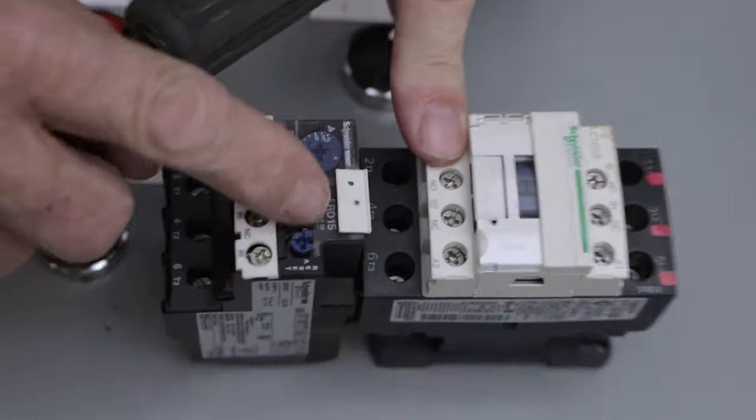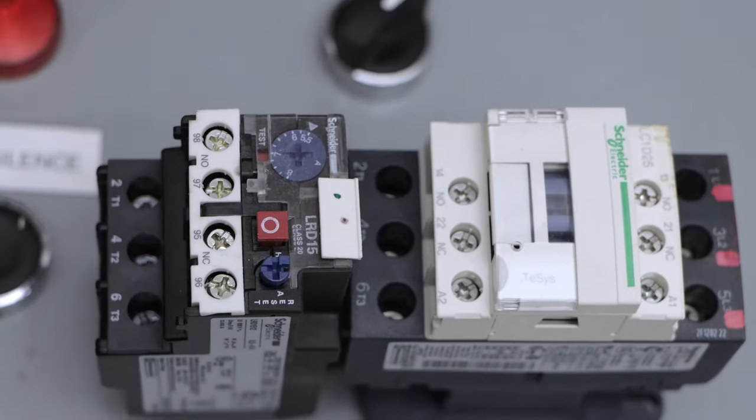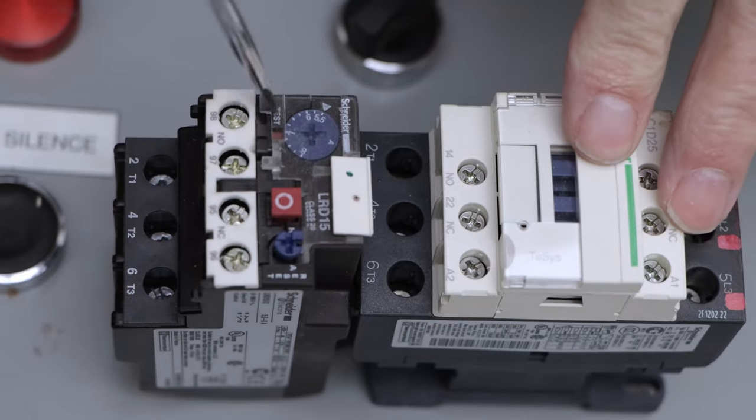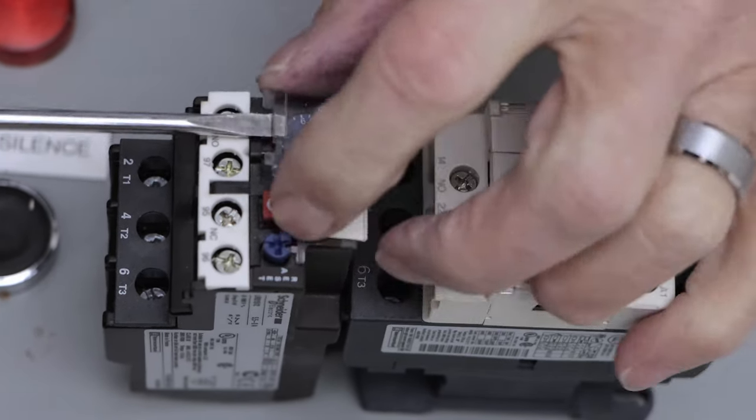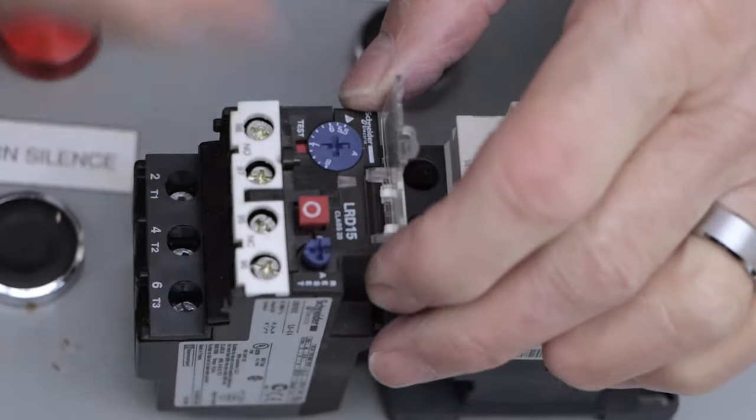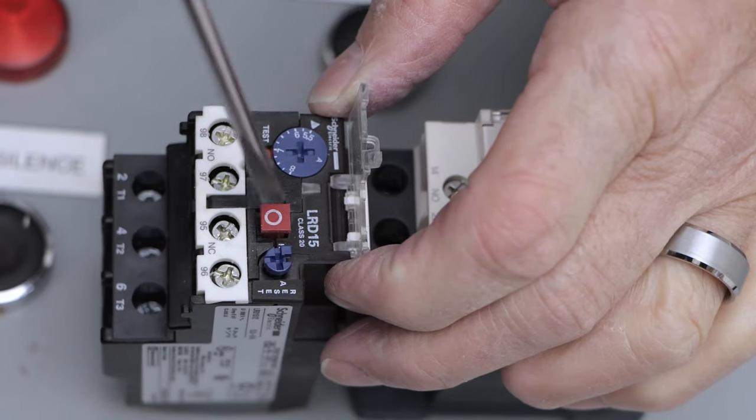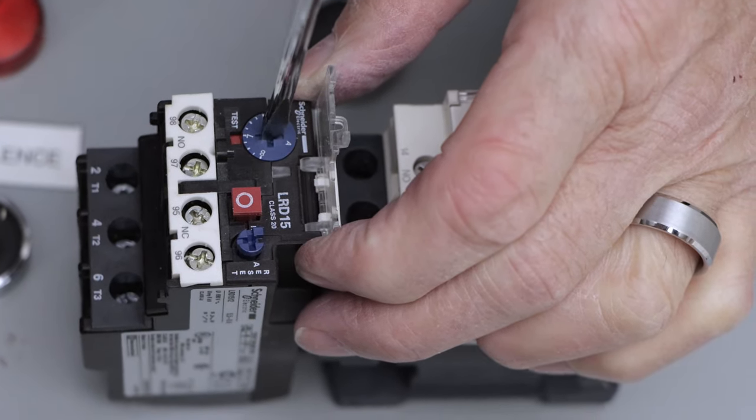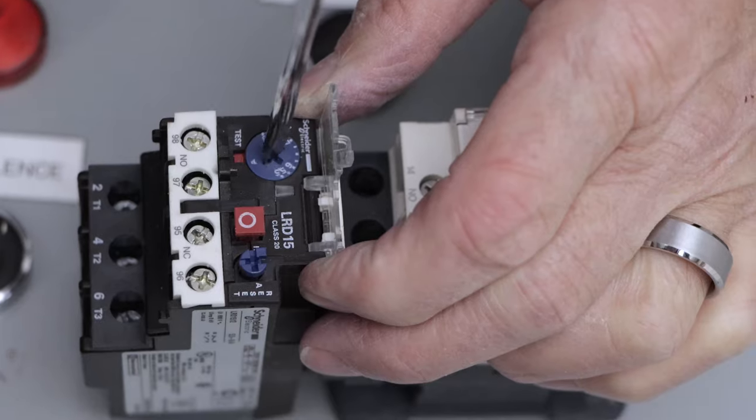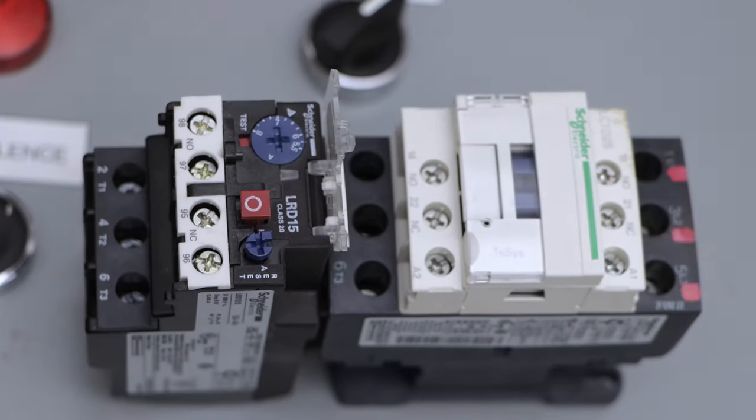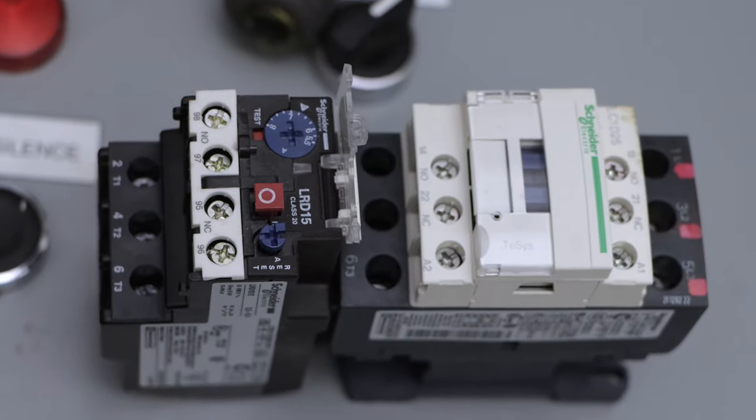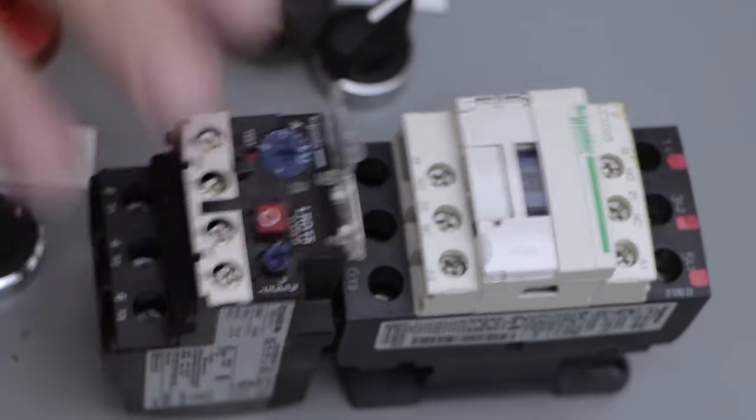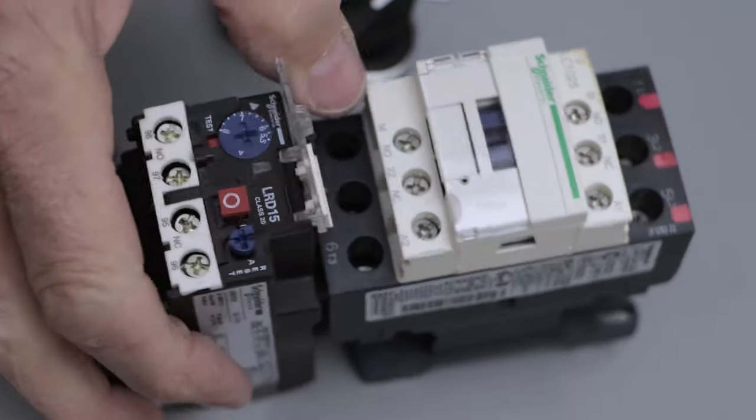This is a reset button right here. We've got an overload setting, so unlike the NEMA starter, we can actually dial in the amount of overload protection we want underneath this window. So this is an LRD15. It has a certain range of current that it can be set from, and we can dial that in to any amount we want. So let's say, for instance, we have a motor that draws 10 amps. So we can dial this into 10 amps, and that immediately sets our overloads for 10 amps of overload.